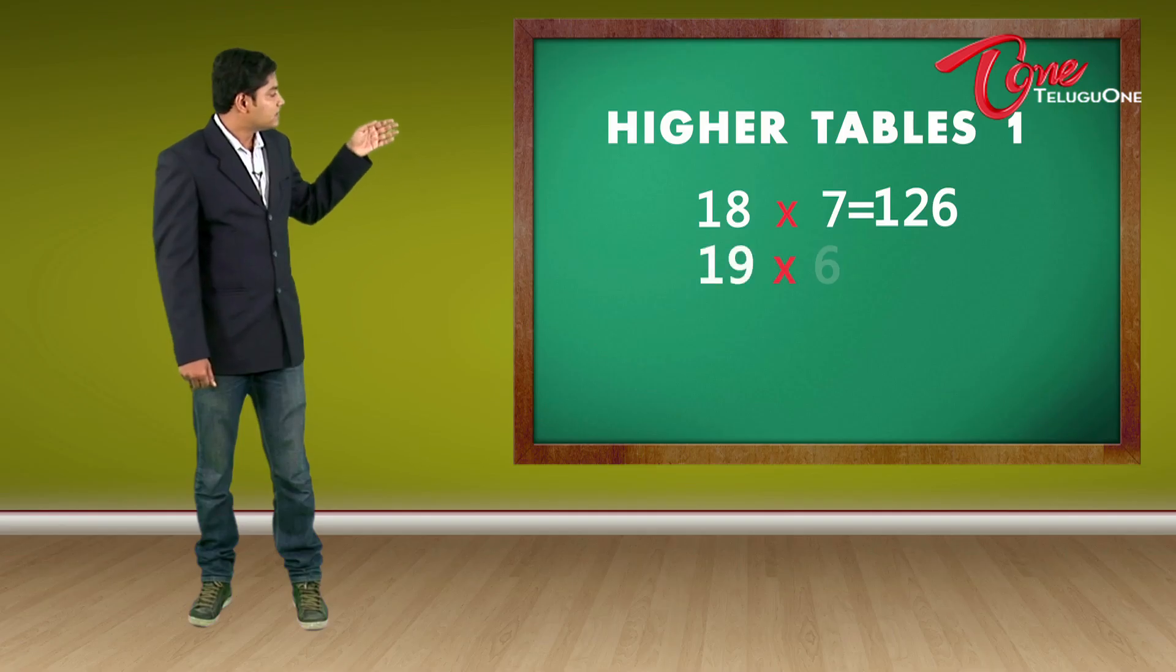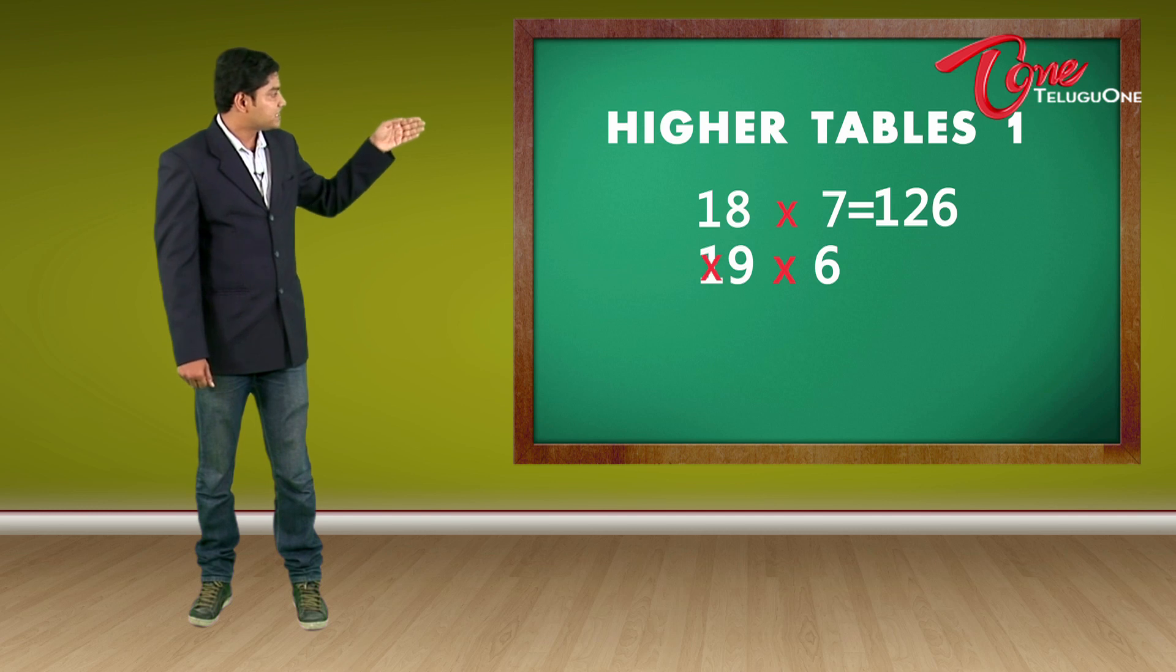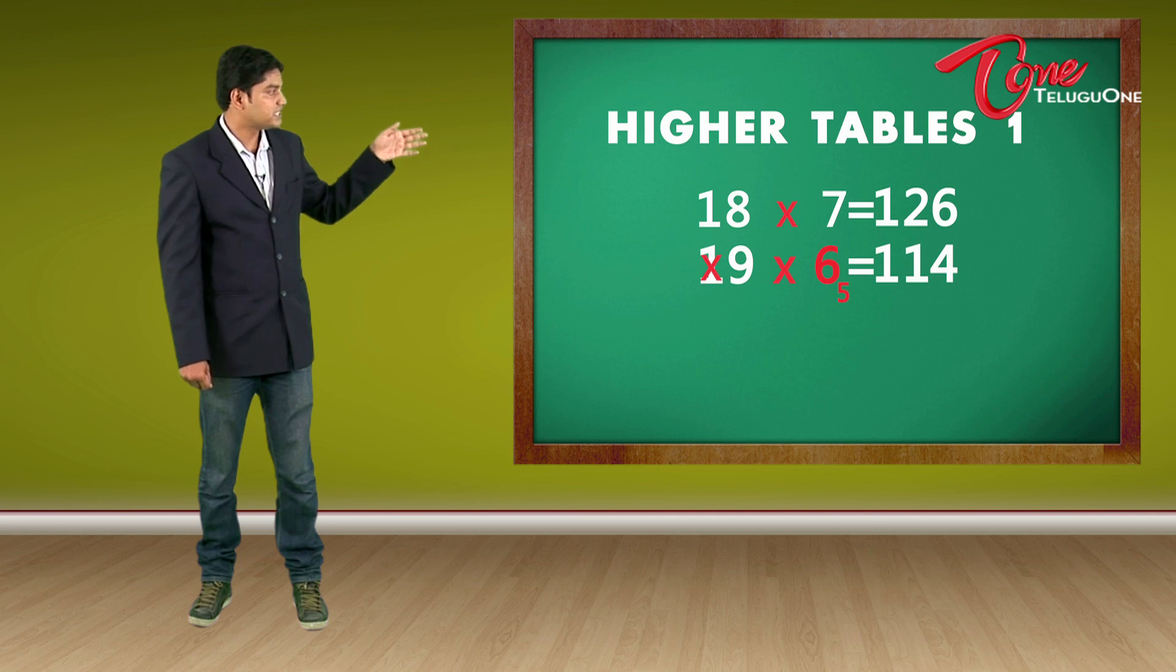So second example. 19 times 6 is 9 times 6 is 54. 5, 4 and 6 plus 5 is 11. So my answer is 114. Let us take another example.